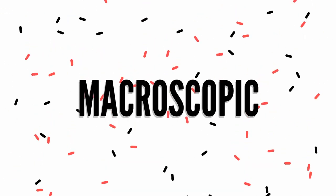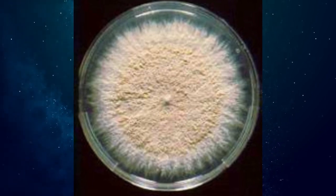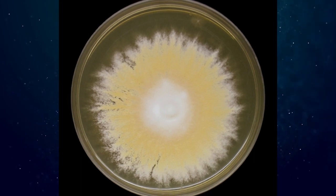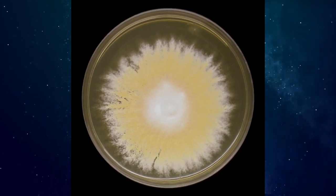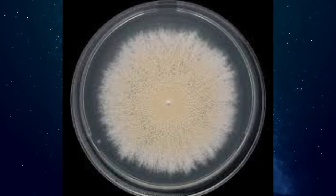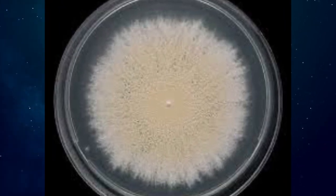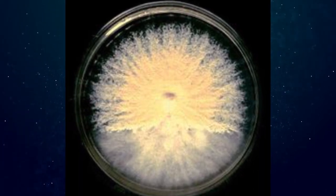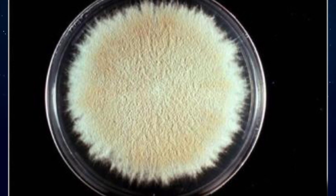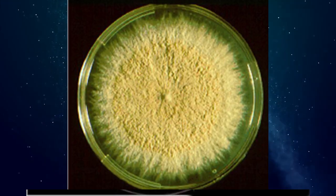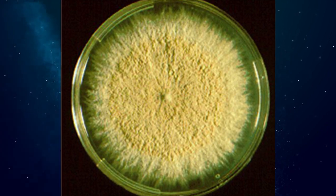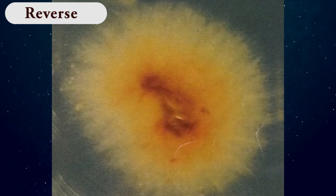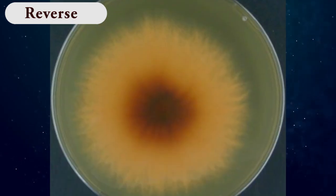Macroscopic Characteristics: The surface is flat, spreading, and coarse powdery, buff cinnamon in color. The reverse side is yellow-brown in color. The colony often develops a white hyphal border or cottony white center.